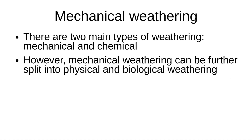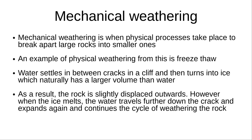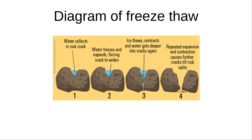Weathering processes include mechanical and chemical weathering. Mechanical weathering processes can be split into physical and biological. Mechanical weathering is when physical processes take place to break apart large rocks into smaller ones. An example of this is freeze-thaw: water settles in between cracks in a cliff, then the water turns into ice, which naturally has a bigger volume than water, and so the rock is slightly displaced outwards, causing entire bodies of rock to split.